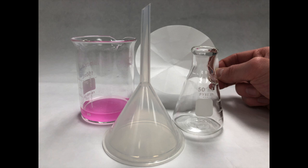For gravity filtration, you will need a 50ml Erlenmeyer flask, a plastic funnel, a 110mm folded filter paper, and your solution in need of filtering.